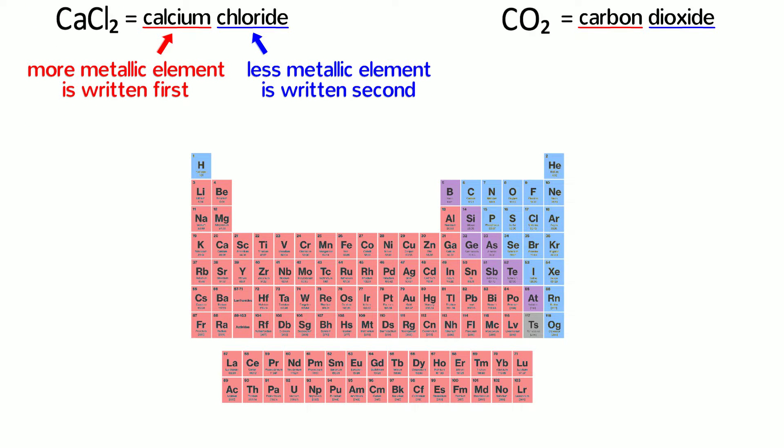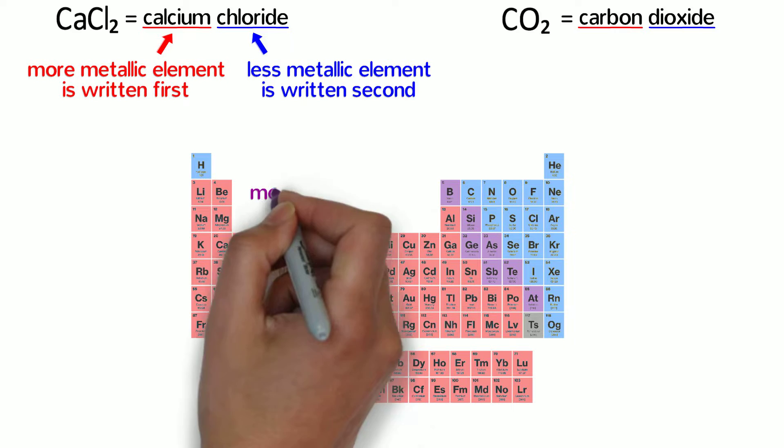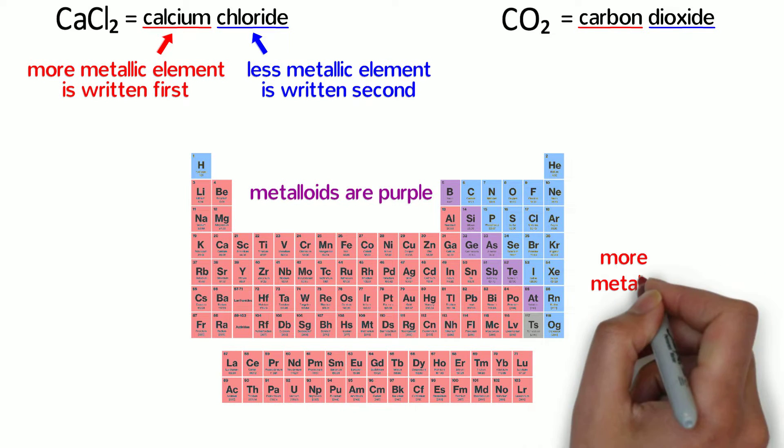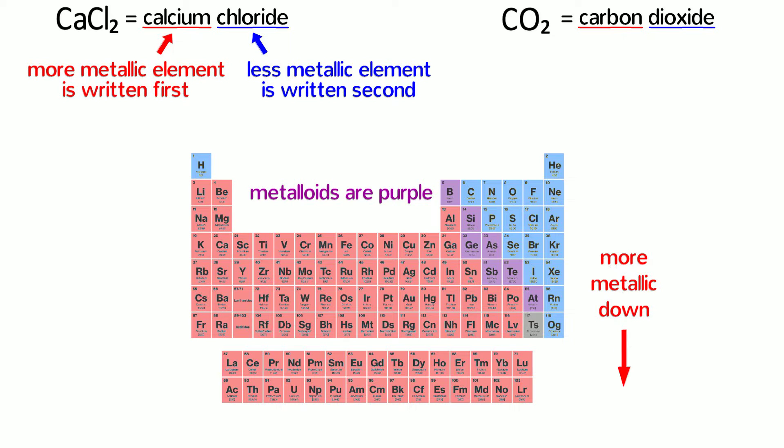In this periodic table, metals are red, nonmetals are blue, and metalloids are purple. As you move toward the metals, that is, as you move down and to the left, the elements become more metallic.